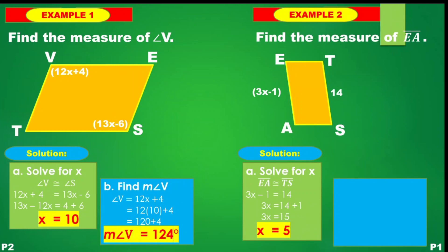Since we have the value of x, which is 5, we will now substitute to find side EA. We have 3x − 1. Substituting x = 5: 3 times 5 minus 1, that is 15 − 1. Therefore, EA is equal to 14 — the same length as segment TS.